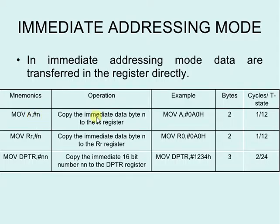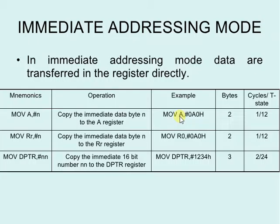Let's take one example: MOV A, #A0H — where A is the accumulator. This instruction will copy A0H to the accumulator directly. So that's the immediate addressing mode: data is provided in the instruction with the '#' sign.